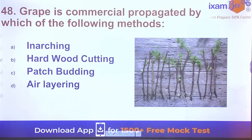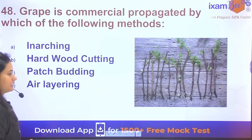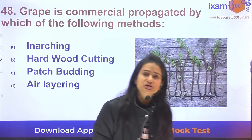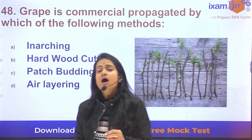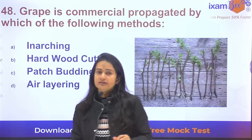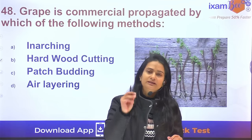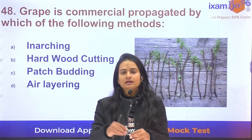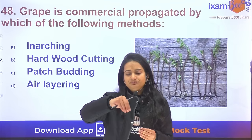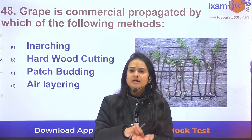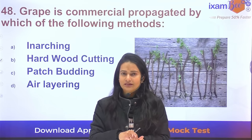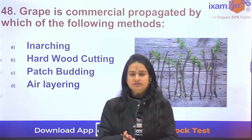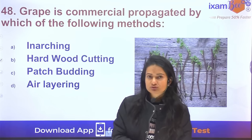Question 48: Grape is commercially propagated by hardwood cutting. After taking cuttings, IBA powder is applied at the base to promote faster rooting.